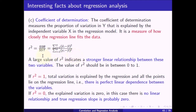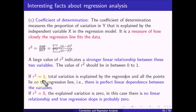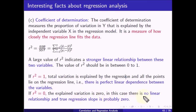A large value of R-squared indicates a stronger linear relationship between the two variables. The value of R-squared must be between 0 and 1. If R-squared equals 1, the total variation is explained by the regression and all points lie on the regression line — a perfect linear dependence. If R-squared equals 0, the explained variation is zero, indicating no linear relationship and the true regression slope is probably 0.